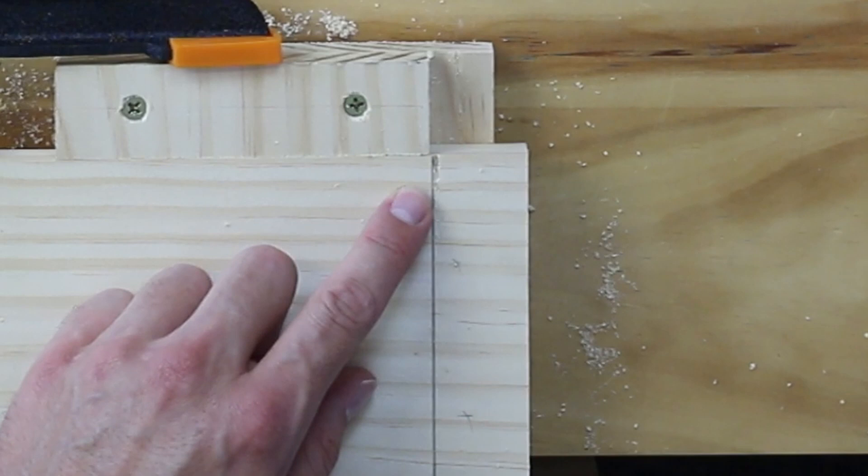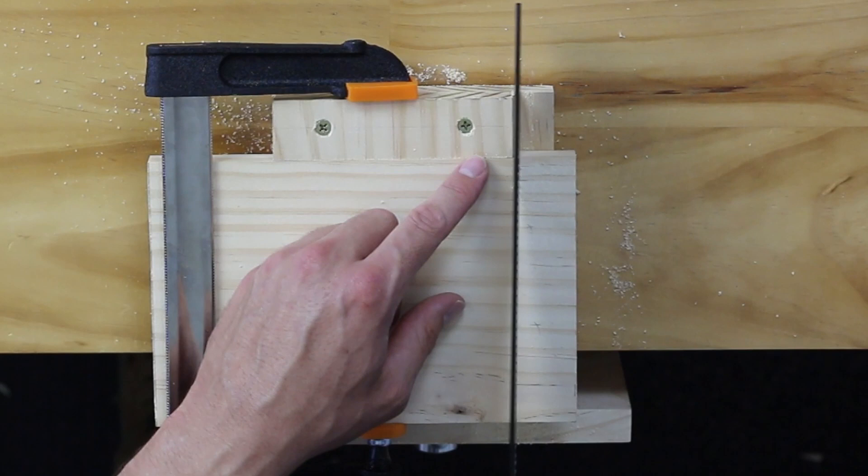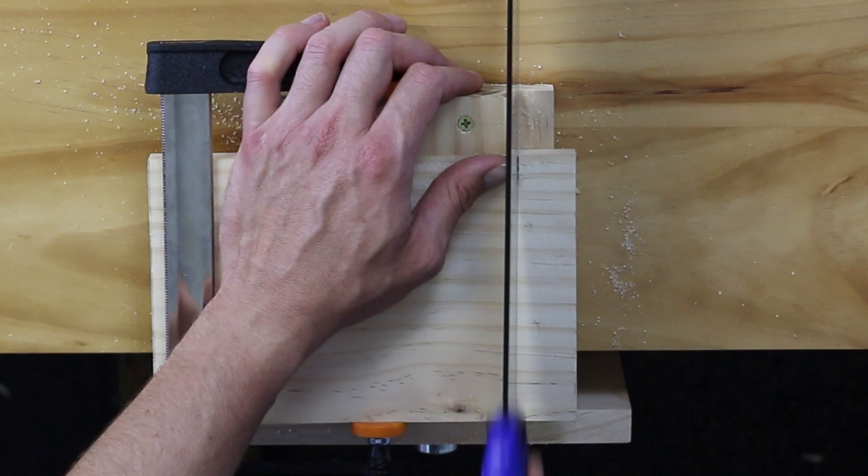Place the blade back in the notch. Place your thumb against the blade and continue to cut, ensuring to use the entire length of the blade. This time, use a forward and backwards motion.